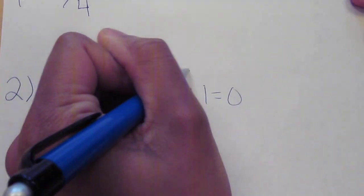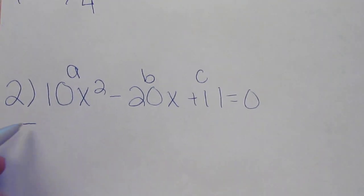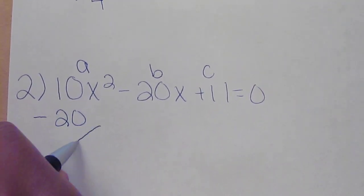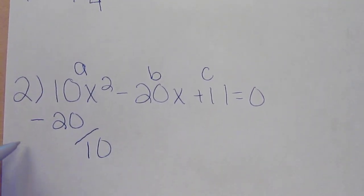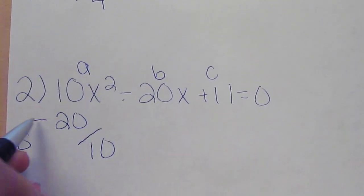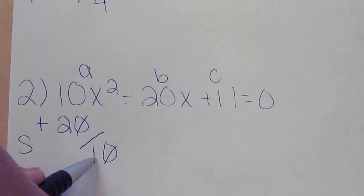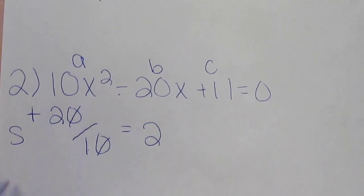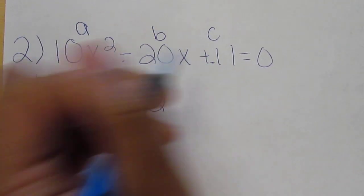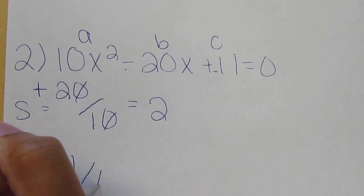A, B, and C. Negative B over A is the sum. Again, the double negative, so it turns into a positive. And this can be reduced as 2 over 1, which equals 2. The product equals C over A, so just 11 over 10.